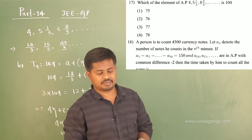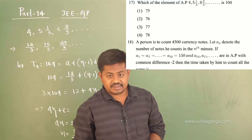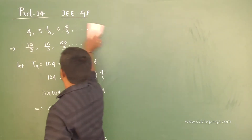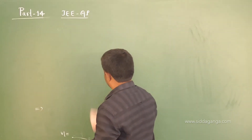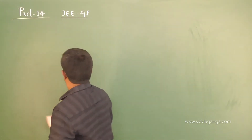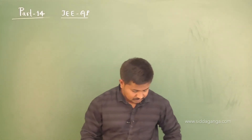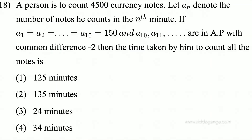So 104 is the 76th term. Option 2 is the correct one. Let us mark question number 18: a person needs to count 4,500 currency notes. Let A_n denote the number of notes he counts in the nth minute. If A1 equals A2 and so on up to A10, all equal 150, and A10, A11, and so on are in AP with common difference minus 2, then find the time taken to count all notes.